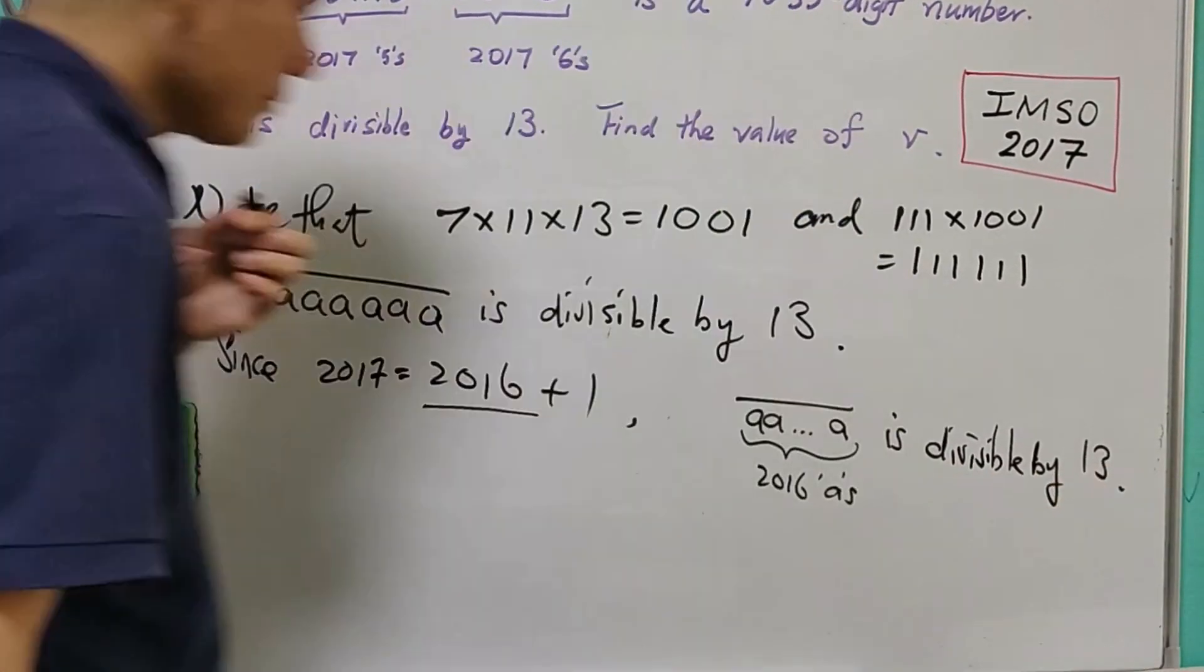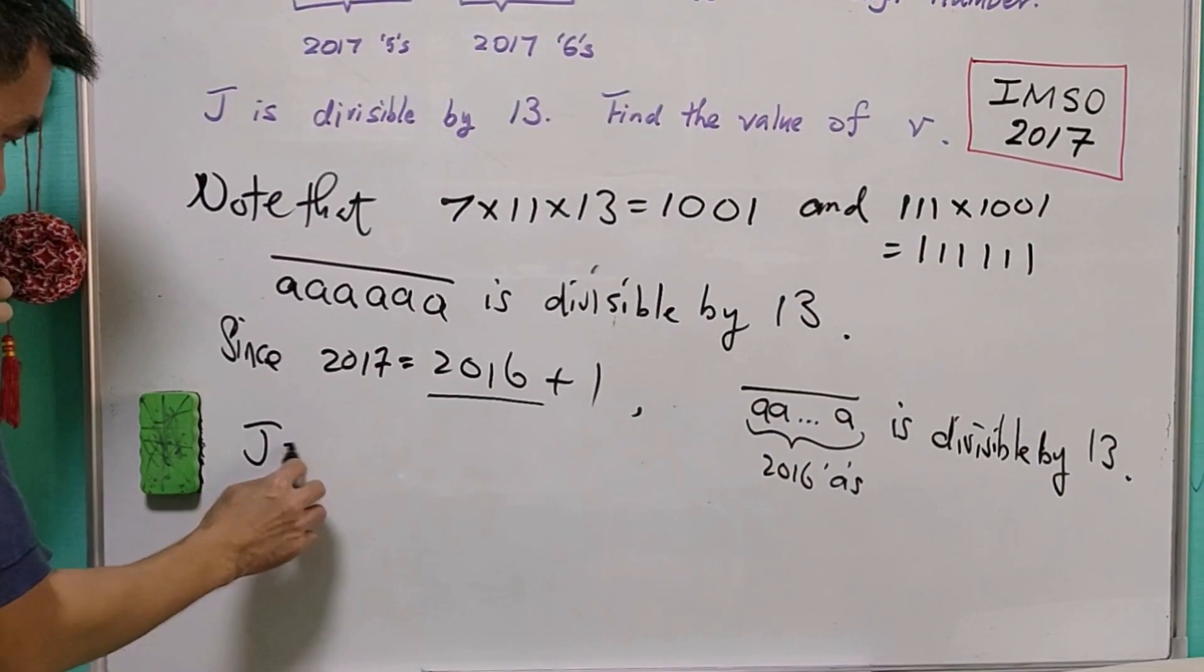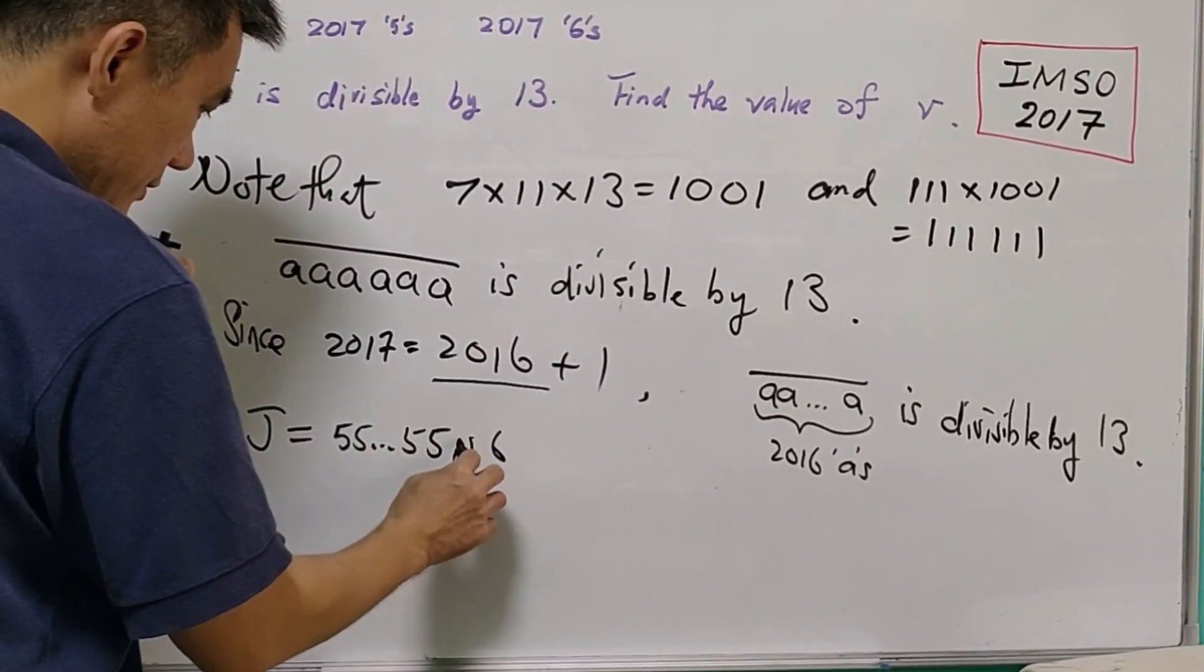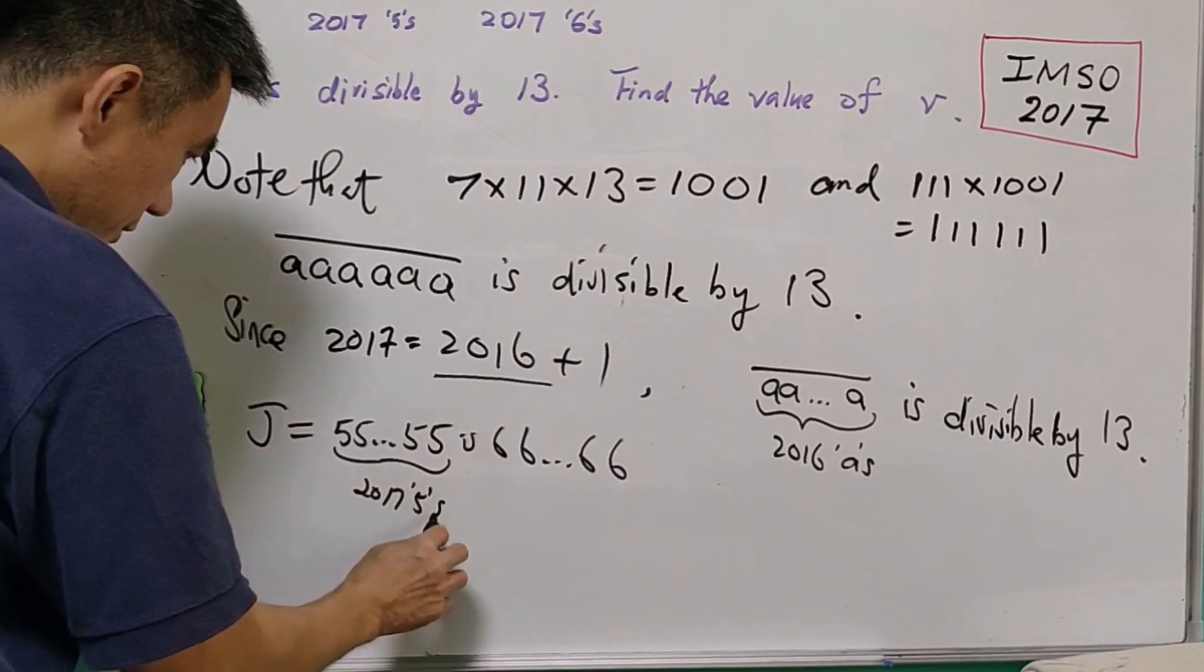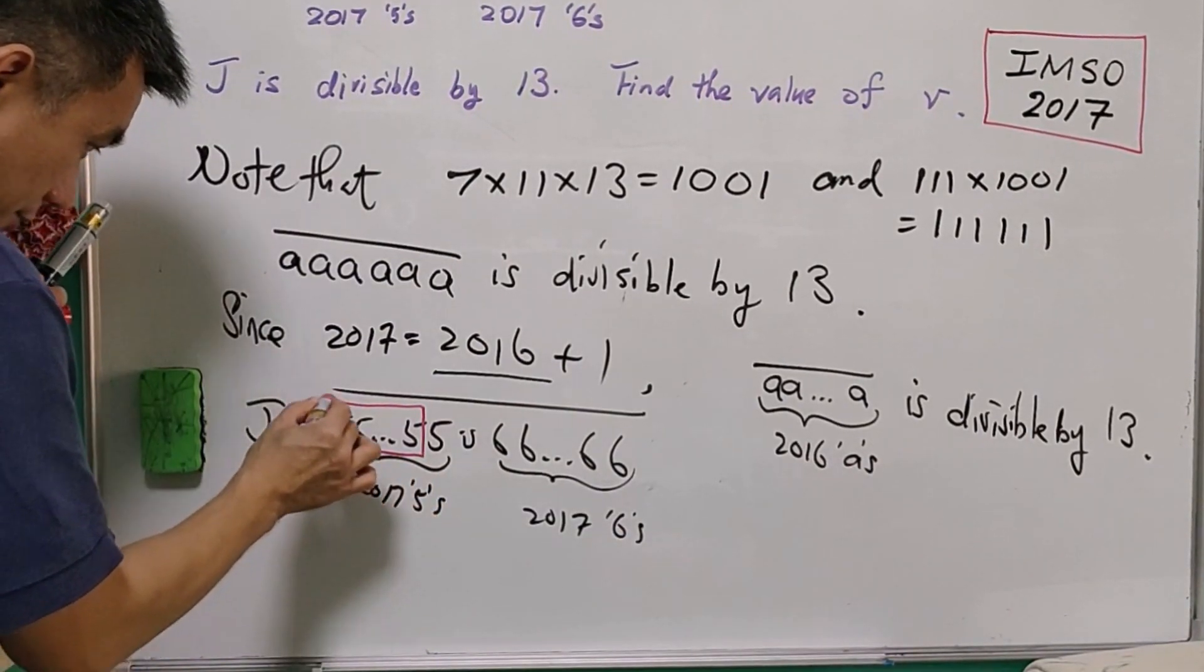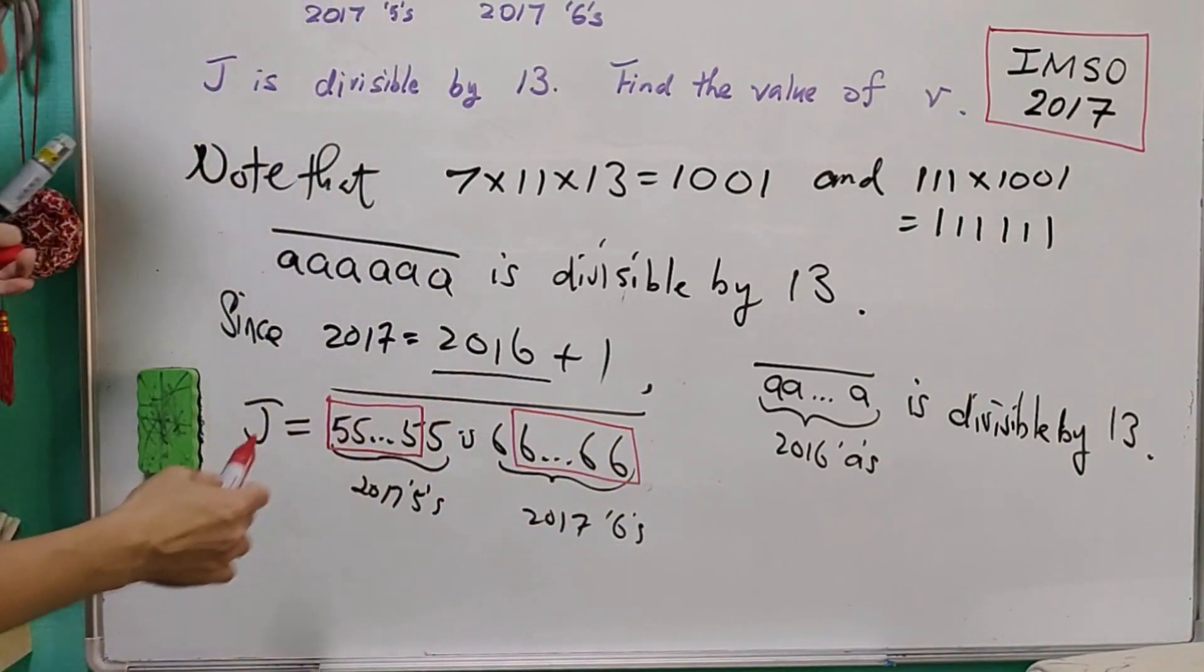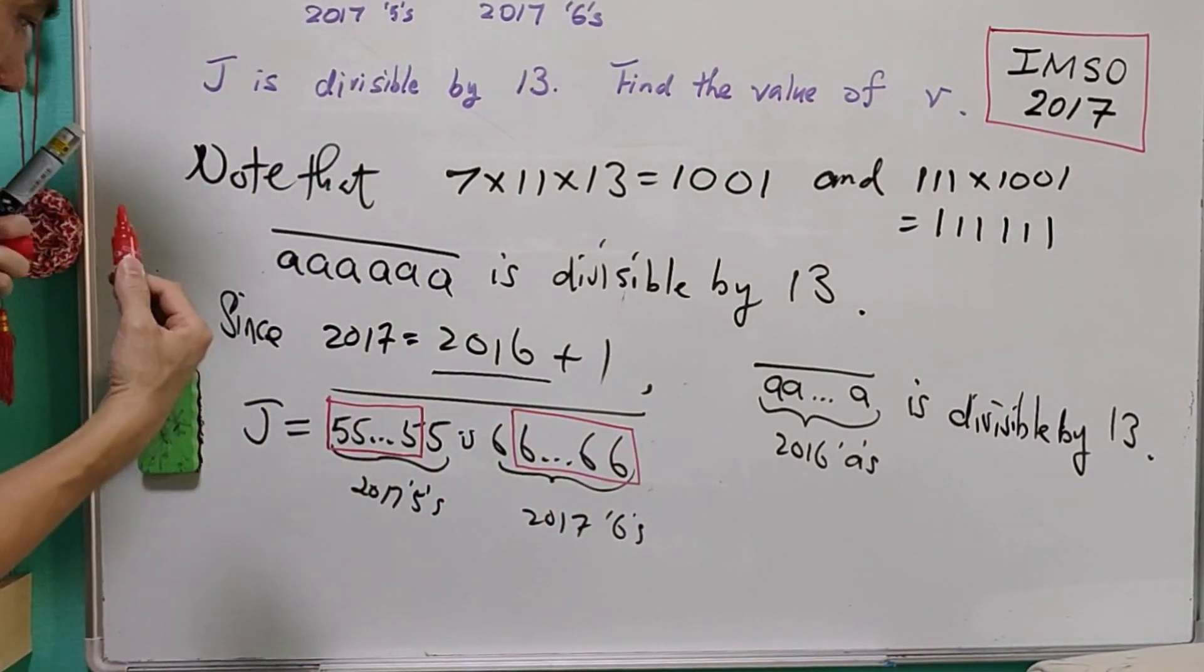So it means that J, where the first 2016 digits are 5 and the last 2016 digits are 6, has these portions all divisible by 13.